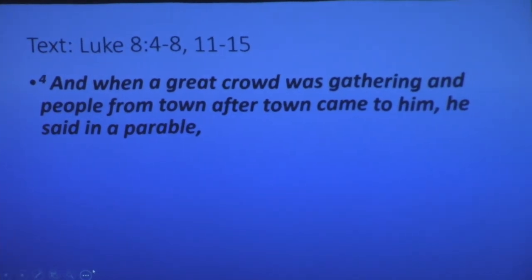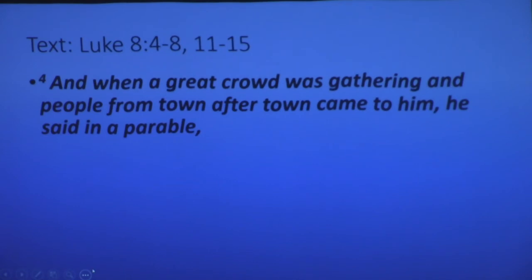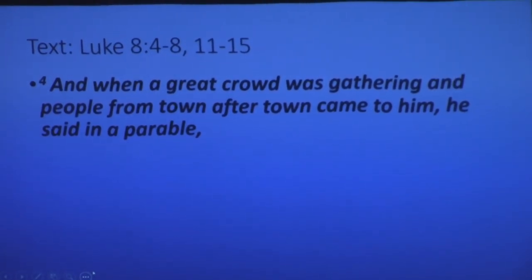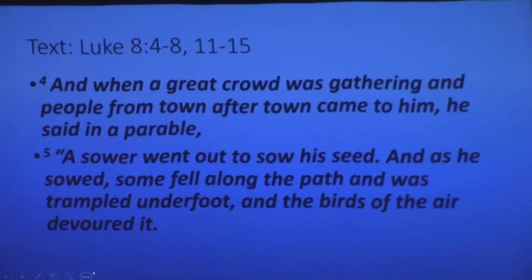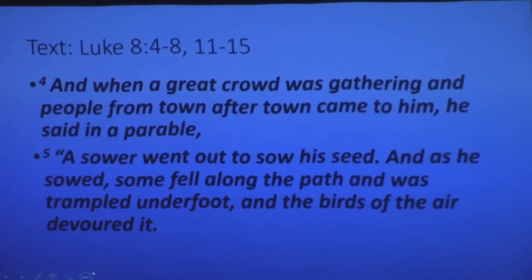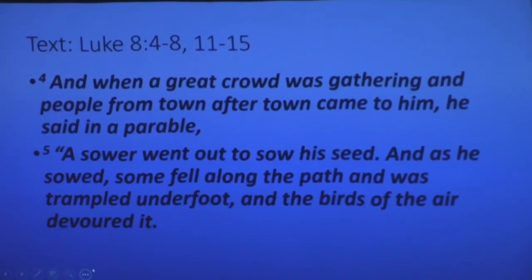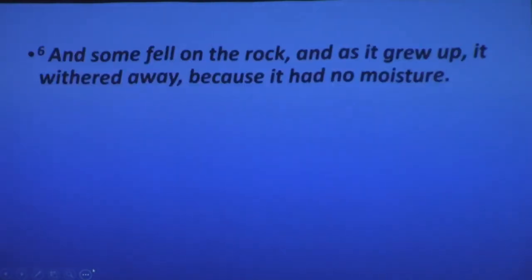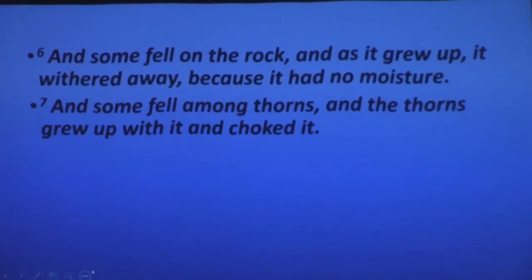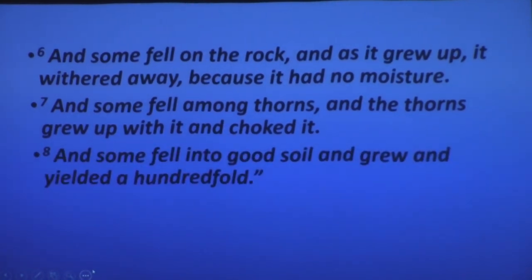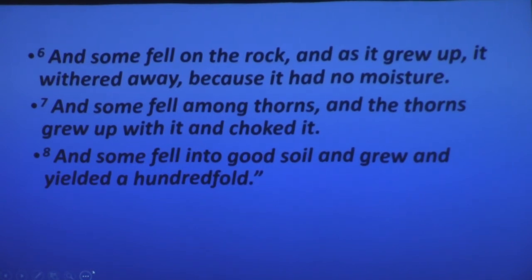When a great crowd was gathering and people from town after town came to him, he said in a parable — Luke doesn't tell us he got out in a boat, but Mark and Matthew do. Verse 5 starts the parable: 'A sower went out to sow his seed. And as he sowed, some fell along the path and was trampled underfoot, and the birds of the air devoured it. Some fell on the rock and withered because it had no moisture. Some fell among thorns, and the thorns grew up and choked it. And some fell into good soil and grew and yielded a hundredfold,' Luke tells us.